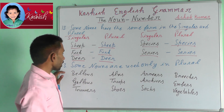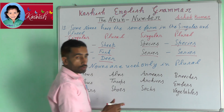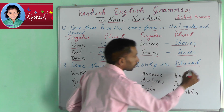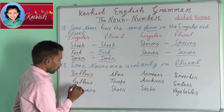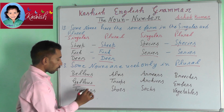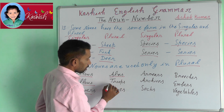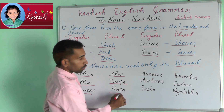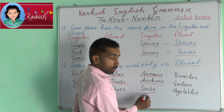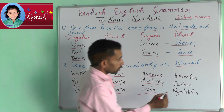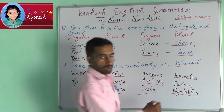Thirteenth rule: some nouns are used only in plural. For example: billows, gallows, trousers, arms, troops, shoes, arrears, archives, socks, breeches, embers, vegetables.